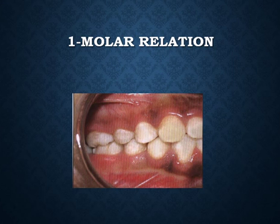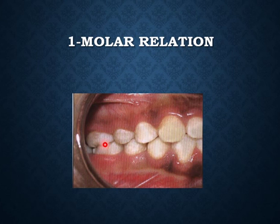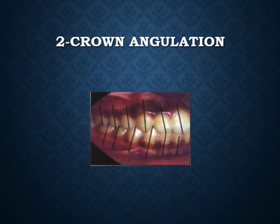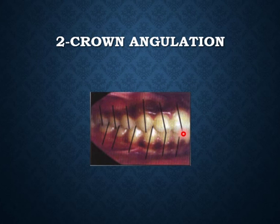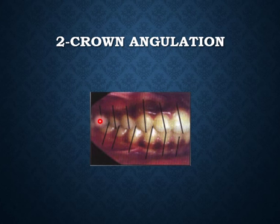Malocclusion is any deviation from normal or ideal occlusion. Reviewing the keys: the mesial buccal cusp of the upper first molar should occlude with the mesial buccal developmental groove of the lower first molar. The crown angulation requires the gingival portion to be more distal than the incisal portion — very important for anterior teeth. The long axis of the molar crown is identified by the dominant vertical groove in the middle of the buccal or facial surface of the molars, or the buccal surface of the premolars.